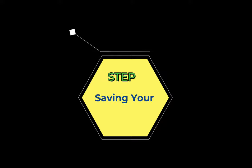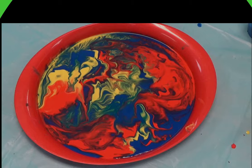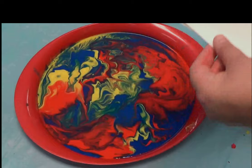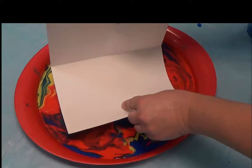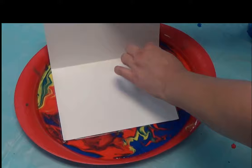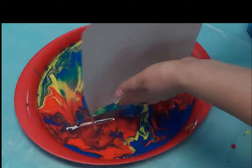Step five, saving your masterpiece. Once you have your paint the way that you like it and would like to capture your masterpiece to save, then with the help from your adult, take a nice thick piece of paper and gently lay it down on the surface of your painting. Then, very carefully, lift the paper up and flip it over to the non-paint side and set it aside on some newspaper to dry.